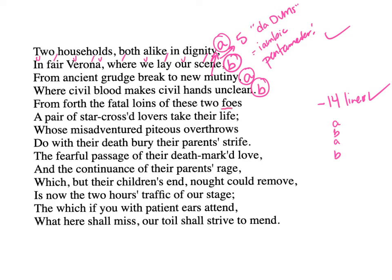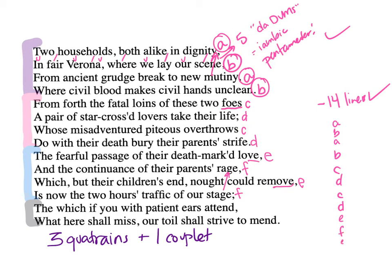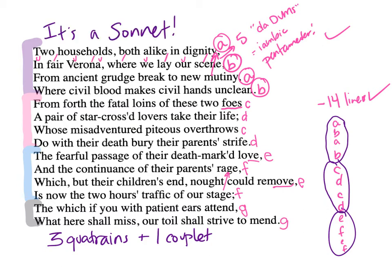We have a new sound in "foes," so I'm going to mark that C. "Life" would be D. "Throws" would be C because it rhymes with "foes." And "strife" and "life" rhyme, so we'll mark that D again. It's looking pretty clearly like a sonnet. We're going to look at "love" — I'm going to mark that E — and "rage" we'll mark F. "Remove" I'll mark E; it's a little bit off of "love," so we're going to call it a slant rhyme — maybe they pronounced it differently in Shakespeare's day. And "stage," which rhymes with "rage," so we'll mark that F. So we've got three quatrains, and then we need to end our sonnet with a couplet. The last two lines need to rhyme: "attend" and "mend" — G, G. Ladies and gentlemen, we've got ourselves a sonnet.